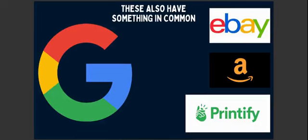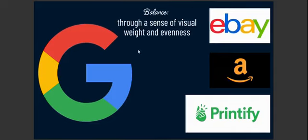Now, there are some other big companies that you might think initially don't have visual balance in their logos, but it's clear their logos work. For example, you have the Google logo, eBay, Amazon, and Printify. All of these logos also have something in common. While they may not be symmetrical, the Amazon one is pretty close — they still have the same visual weight.